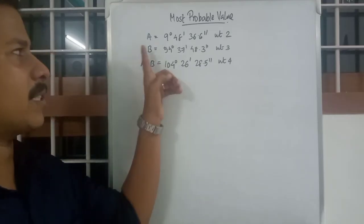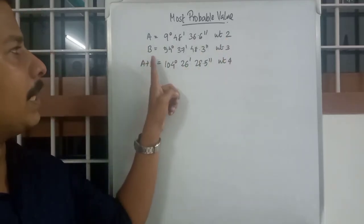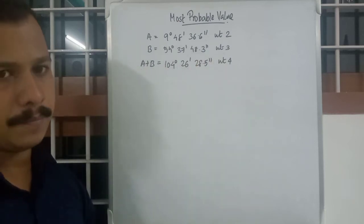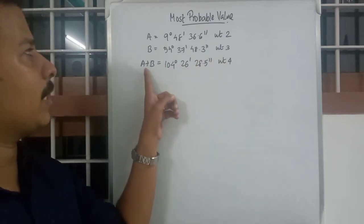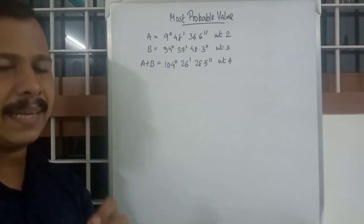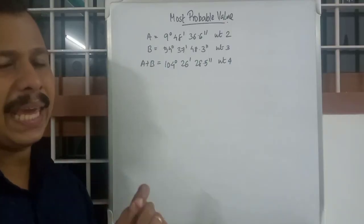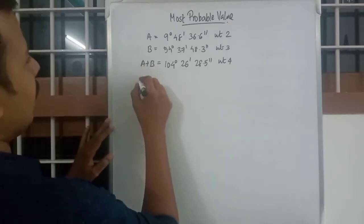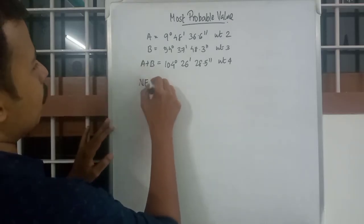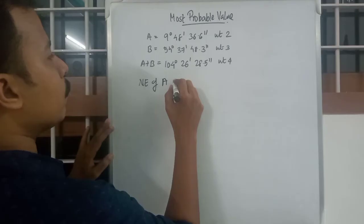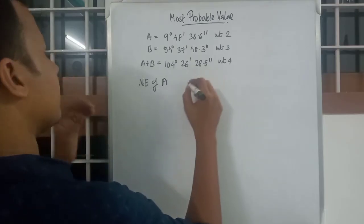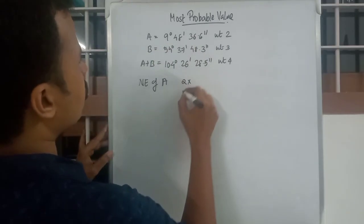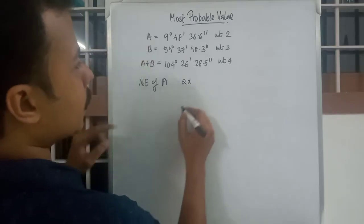Moving on to the next question: we have three equations — A with weight 2, B with weight 3, A+B with weight 4. There are two unknowns, and you have to find the most probable values of A and B. For the normal equation of A: the coefficient of A in equation one is 1, so multiply by weight 2.